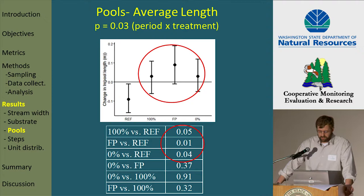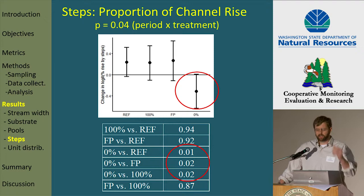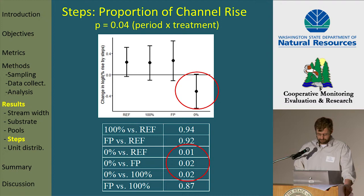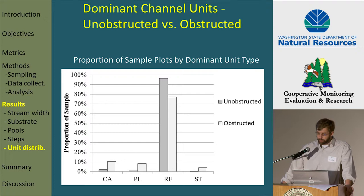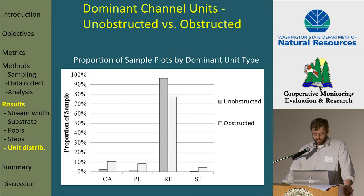We estimated an increase in average pool length for all of the treatments relative to the reference. We also saw a decrease in the proportion of the channel rise attributed to steps in the 0% treatment, with an increase everywhere else. In our more qualitative comparison of obstructed and unobstructed reaches during the post-harvest period, riffles were by far the most common channel unit type by length in unobstructed reaches, while in the obstructed reaches the prevalence of riffles was much less, and cascades, pools, and steps were all more common.